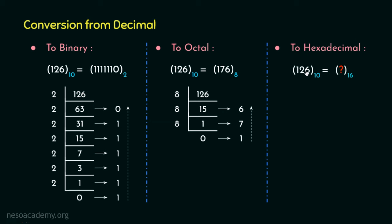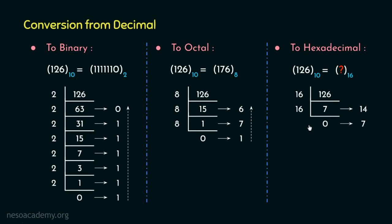Let's observe the conventional decimal to hexadecimal conversion. We take the value 126 and keep performing the factorization with the base value 16 until the quotient is reduced to 0. 126 divided by 16 gives the quotient 7 and the remainder 14. Then 7 divided by 16 produces the quotient 0 with remainder 7. Since we are talking about hexadecimal, 14 is represented as E. Recording the remainders in reverse, the equivalent hexadecimal value of 126 is 7E.